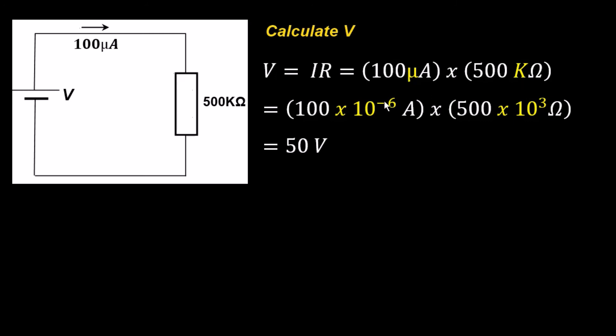So we just make a simple solve. Remember, micro, according to our table, was 10 to the power minus six. And kilo is 10 to the power of three. So you put this in your calculator. 100 times 10 to the power of minus six, which represents the micro. And 500 times 10 to the power of three, which represents the kilo.